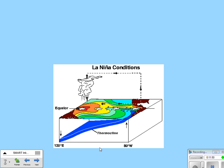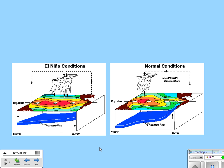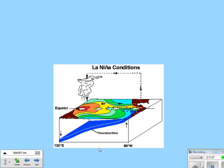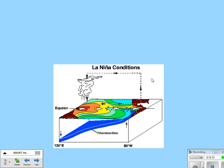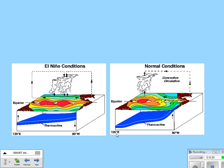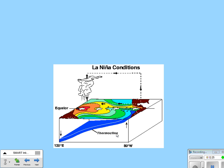La Niña conditions should be compared back to normal conditions. La Niña's convection current is very similar in placement to normal conditions. But the big difference is the thermocline — the La Niña thermocline is much steeper compared to normal conditions.